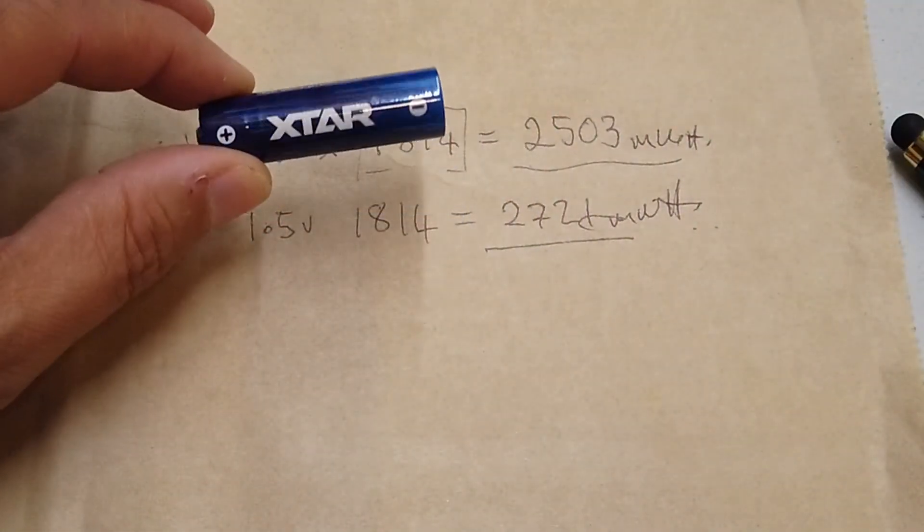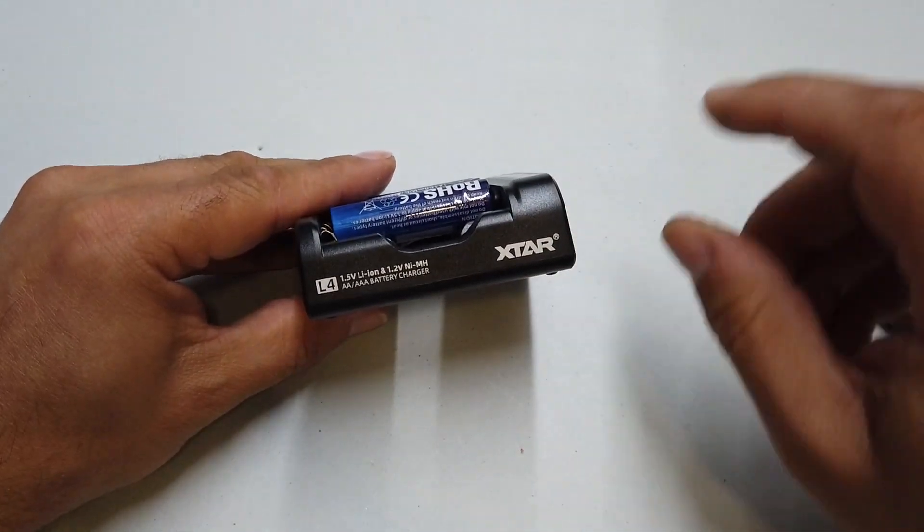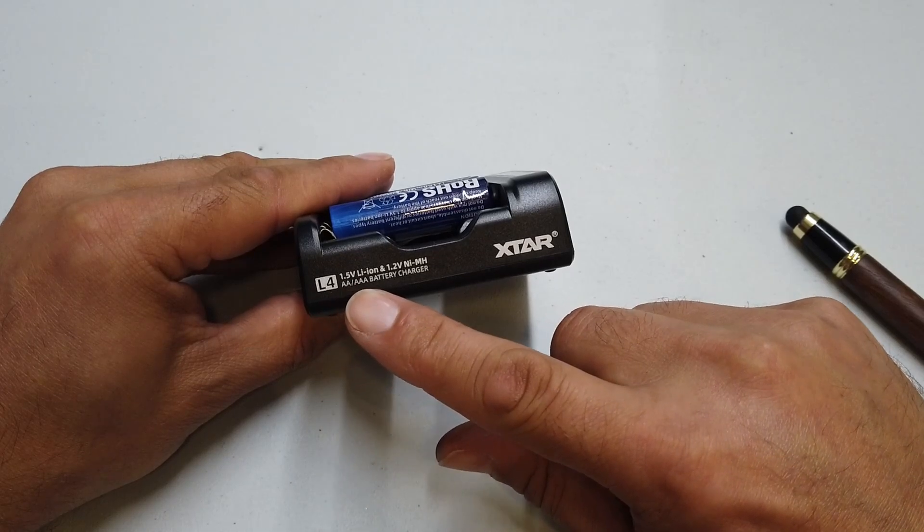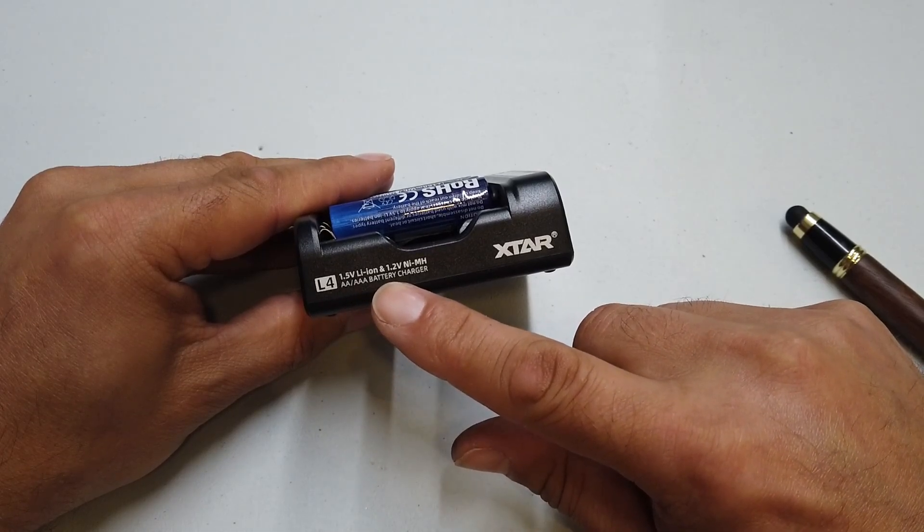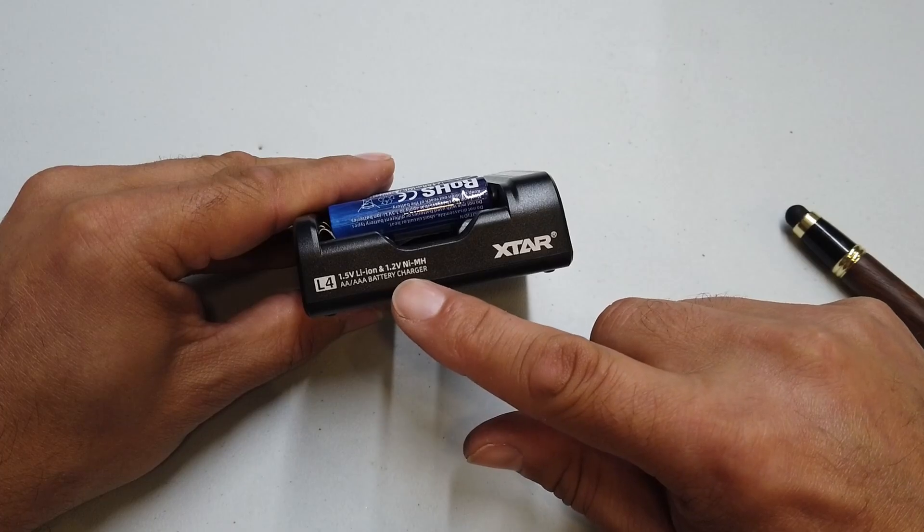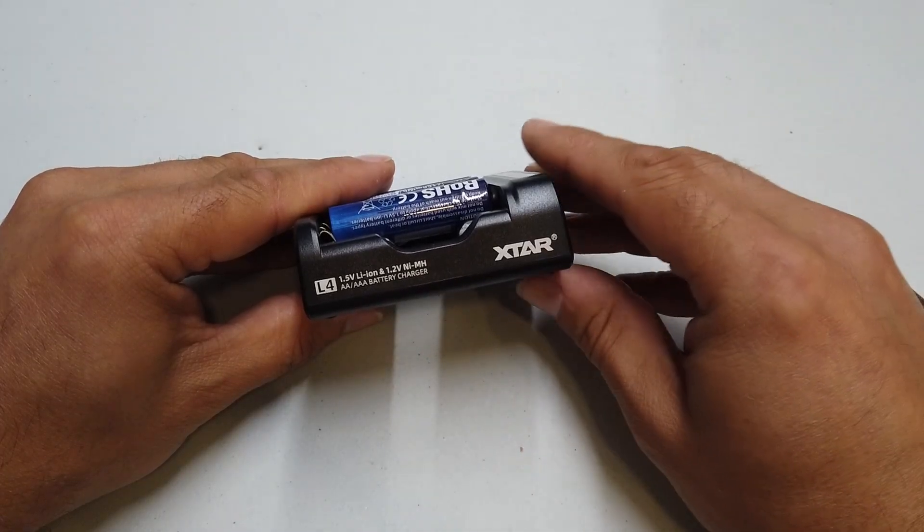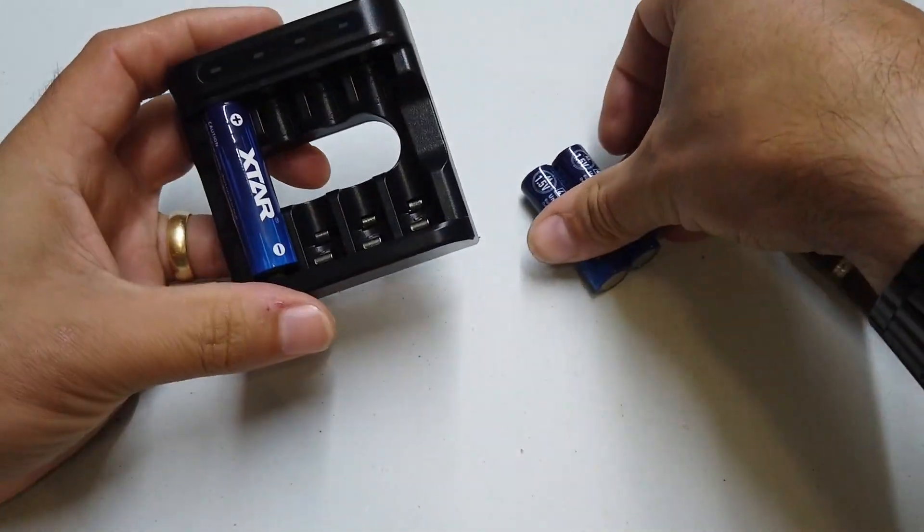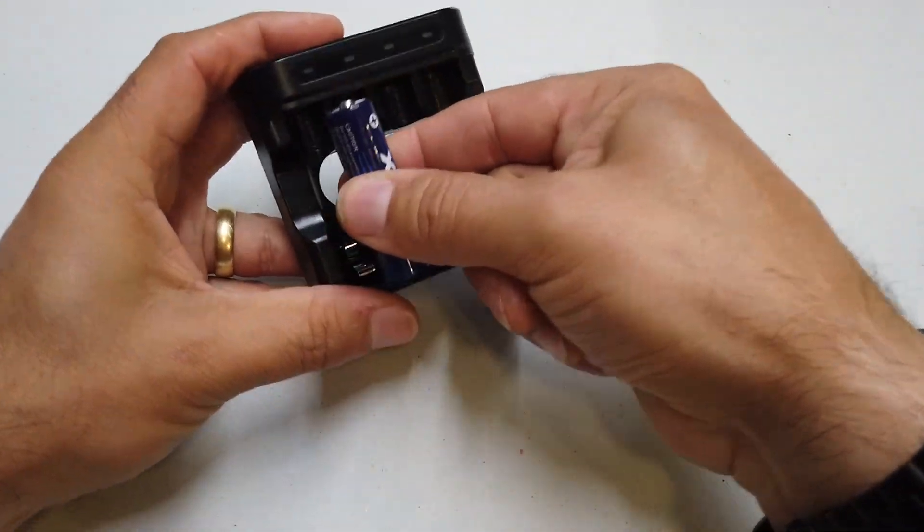The other thing to consider here is that this X-Star battery charger can contend with 1.5 volt lithium ion charging and also 1.2 volt nickel metal hydride cells as well, both in AA and triple A formats. The other thing that I really liked about it was the fact that it has this little finger hole in the back of it so you can poke your finger through and you can pop those batteries out.